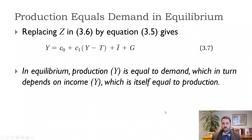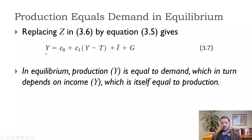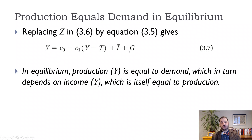Our equilibrium condition is simply that production equals demand. All we did to get from our last equation to this one was replace Z with Y. So now we have Y equals C0 plus C1 times (Y minus T) — that's disposable income — plus investment spending, which is fixed in this version, plus government spending.